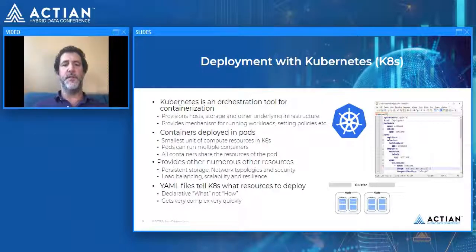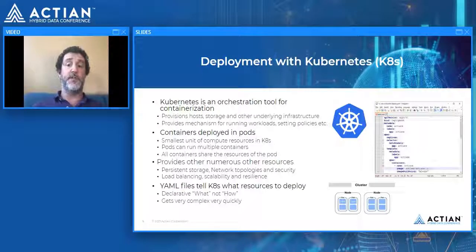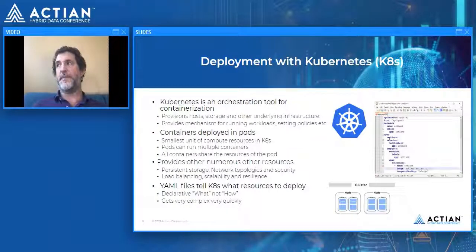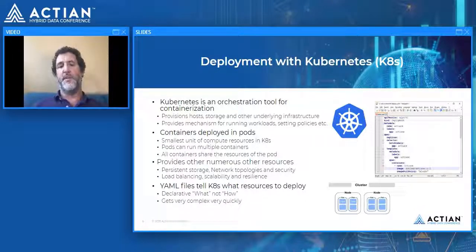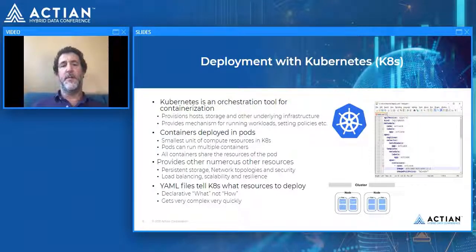In Kubernetes, containers run in units called pods. Pods are the smallest unit of compute resource in Kubernetes, and a pod can run multiple containers that all share the same resources. This is useful because if you have a complex initialization process, you can run init containers before launching the main container to ensure everything is set up. You can also run multiple containers concurrently in the same pod — for example, one running a database and another running an Apache web server, built and managed separately but deployed to talk to each other.